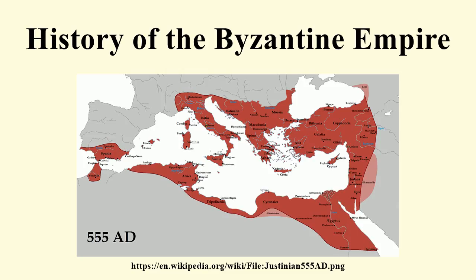Justin's successor, Tiberius II, choosing between his enemies, awarded subsidies to the Avars while taking military action against the Persians. Though Tiberius's general Maurice led an effective campaign on the eastern frontier, subsidies failed to restrain the Avars. They captured the Balkan fortress of Sirmium in 582, while the Slavs began to make inroads across the Danube.